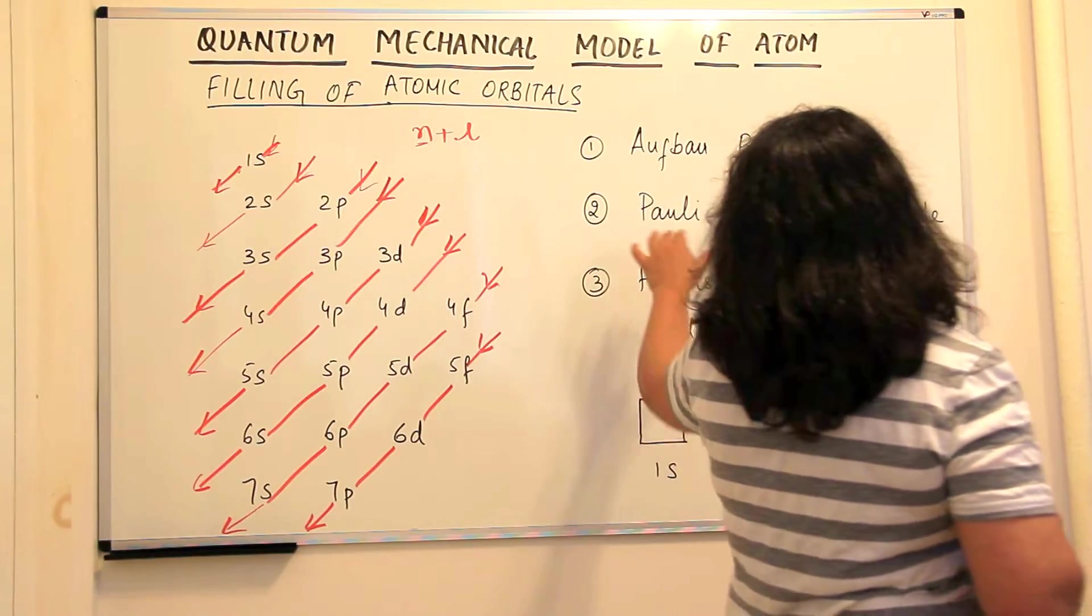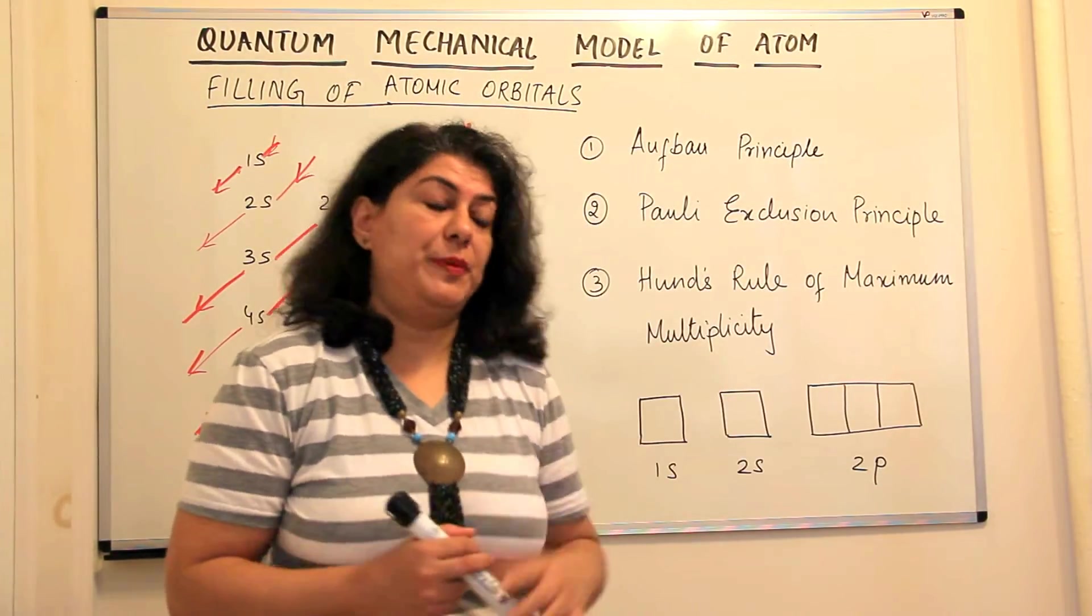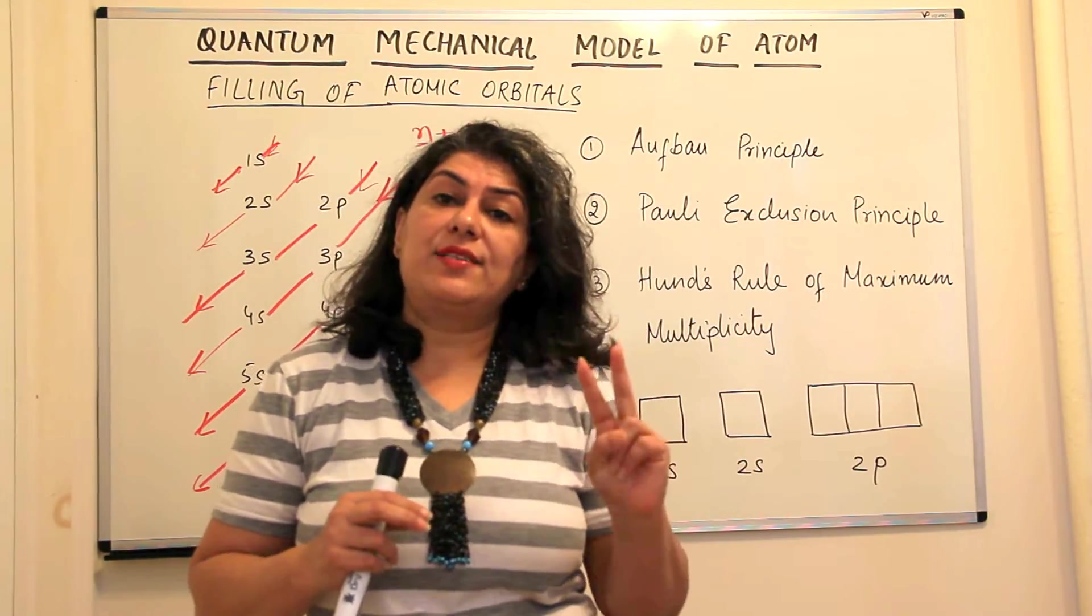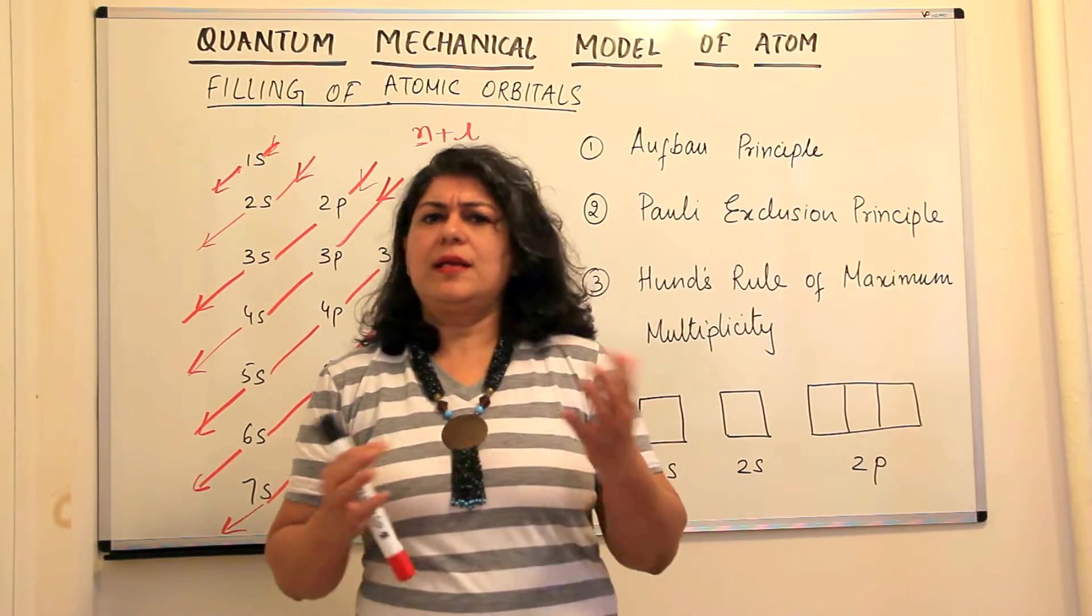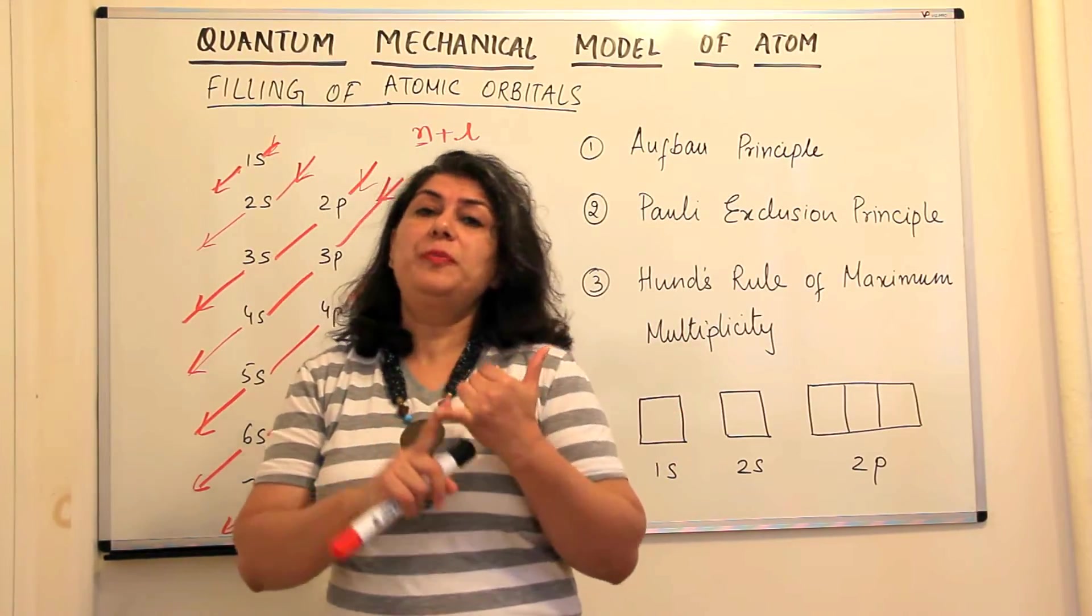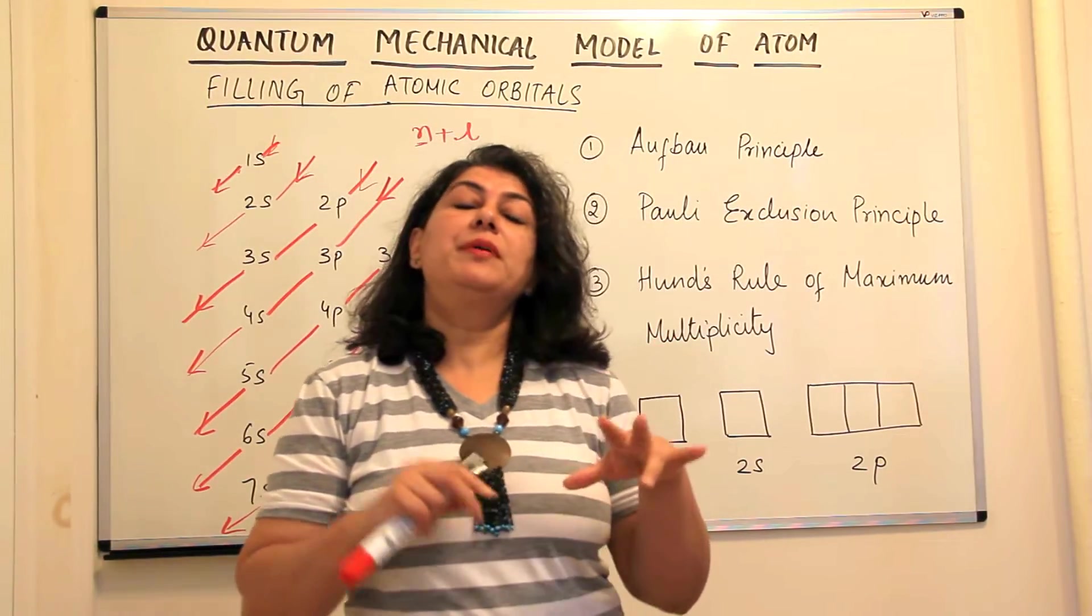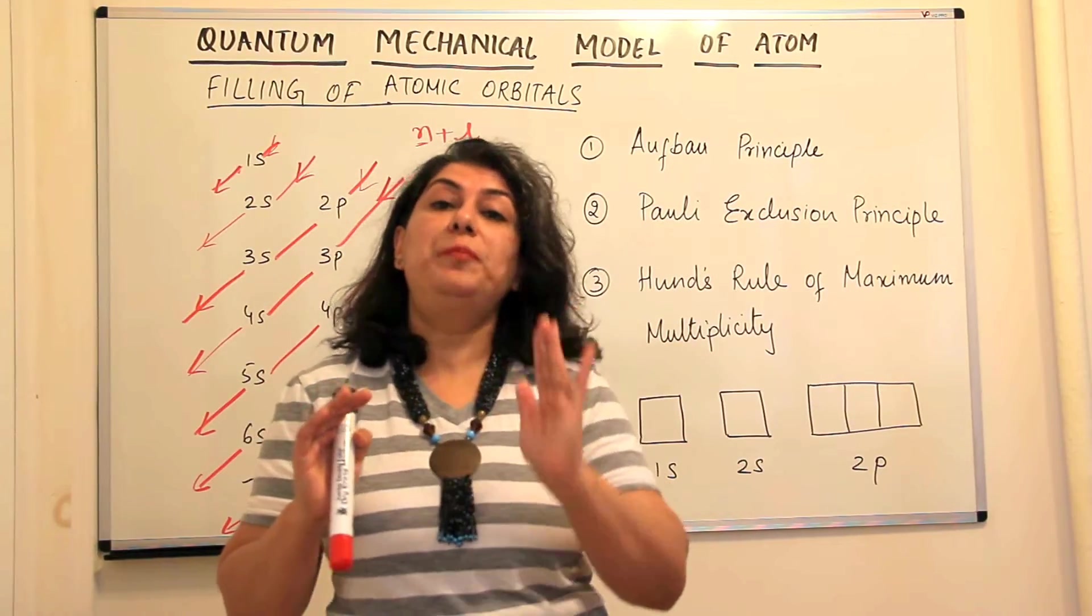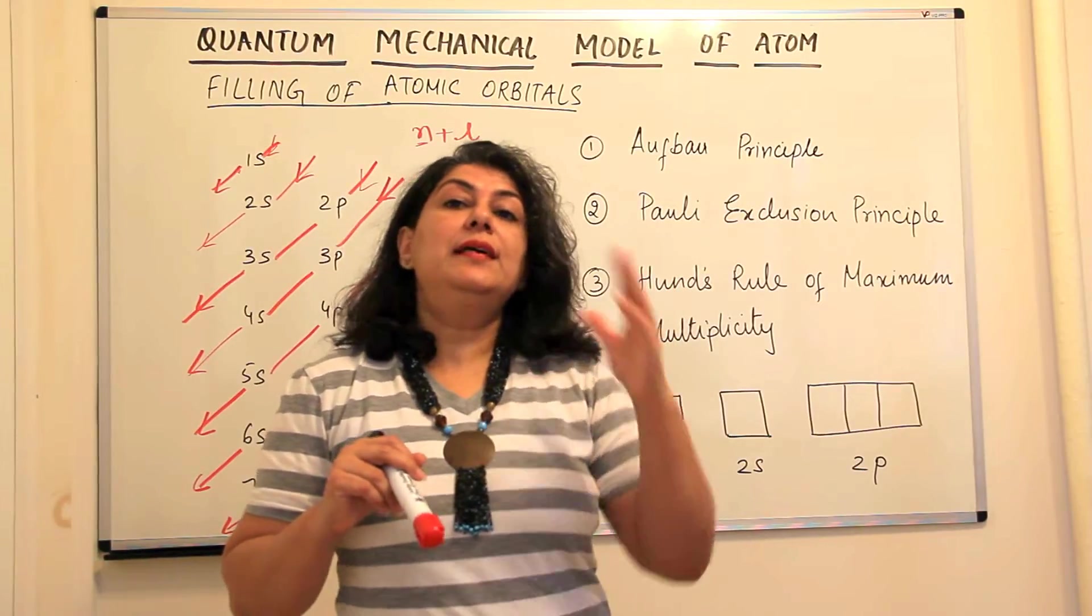The next principle is known as the Pauli exclusion principle. It says that no two electrons in an atom can have the same set of four quantum numbers. It's understandable. We know the principal quantum number tells us about the shell. The azimuthal quantum number tells us about the subshell, whether it's the S subshell, P subshell, D subshell or F subshell.